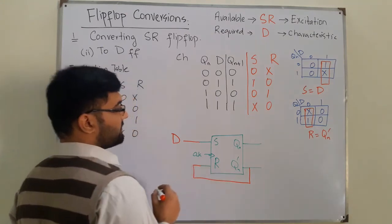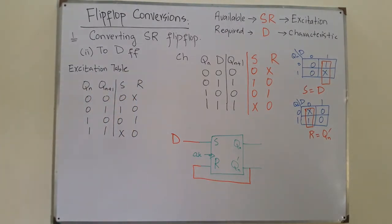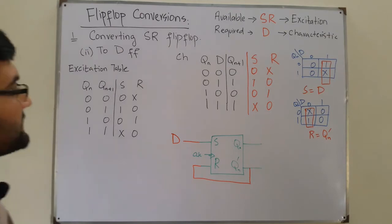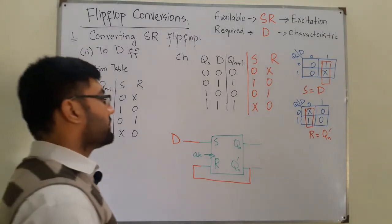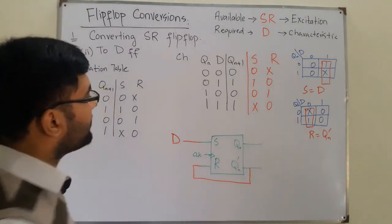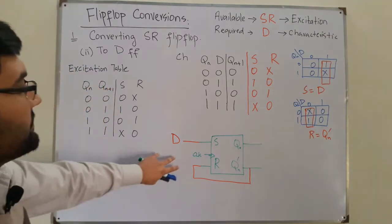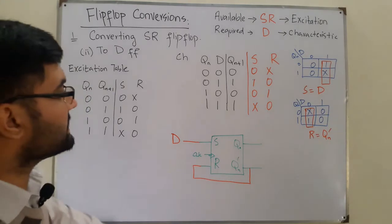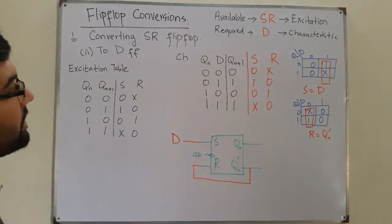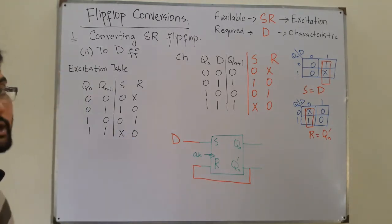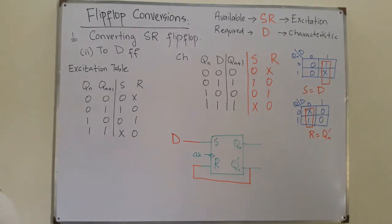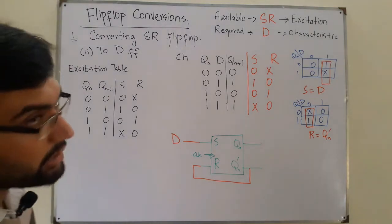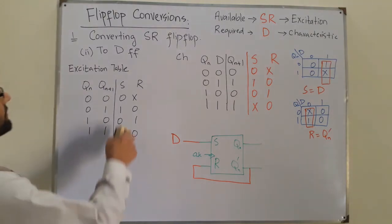You give Qn complement to R. So that's the conversion — we have converted the SR flip-flop into a D flip-flop. This particular circuitry will now work as a D flip-flop. The next conversion is SR to T flip-flop.